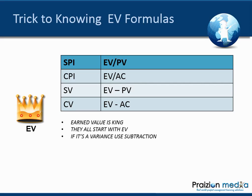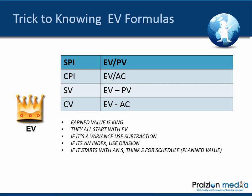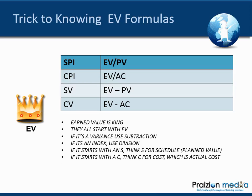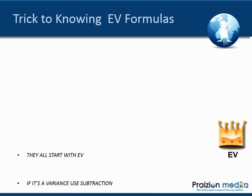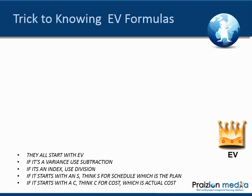Here's the trick to remembering these formulas: they all start with EV — Earned Value. If it's a variance, use subtraction. If it's an index, use division. If it starts with S, think S for schedule, which means planned value — the schedule is the plan. If it starts with C, like Cost Performance Index or Cost Variance, think C for cost, which is actual cost.